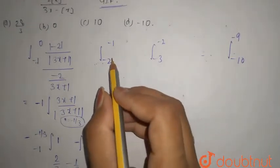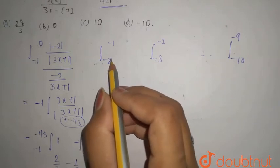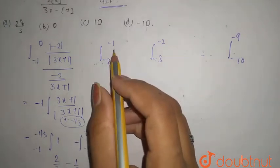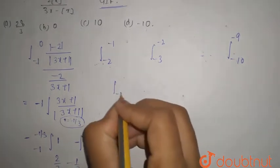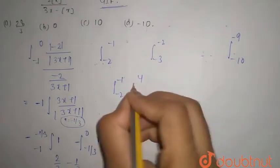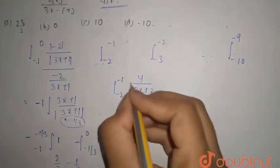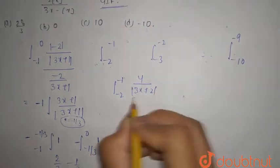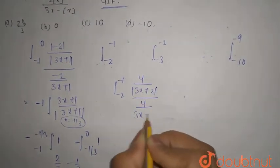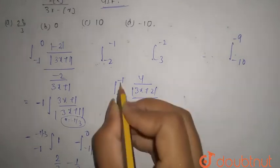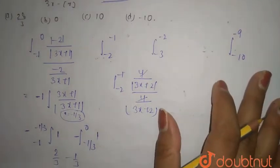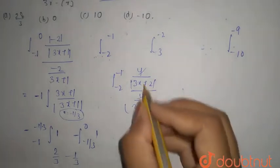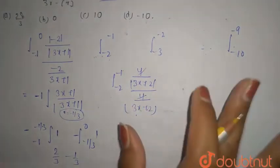Similarly, for this interval, that is from minus 2 to minus 1, it would be minus 2 to minus 1, 4 upon 3x plus 2, because you have put just the value for 2, mod divided by 4 upon 3x plus 2. So this will be positive only, because at the interval this will be positive. So you can say this is cancelled, and you are only left out with 3x plus 2 divided by 3x plus 2, that is equals to 1.